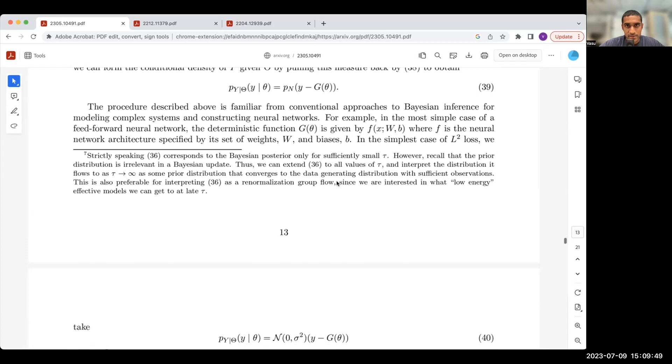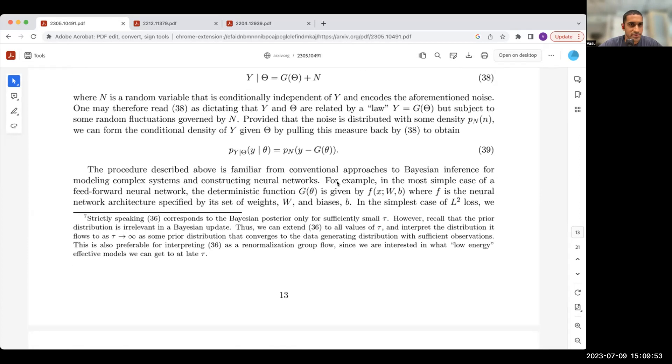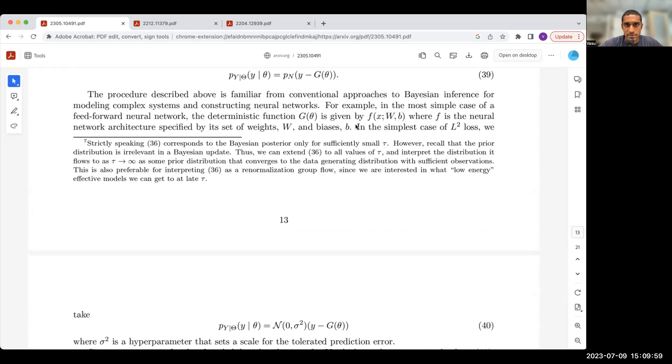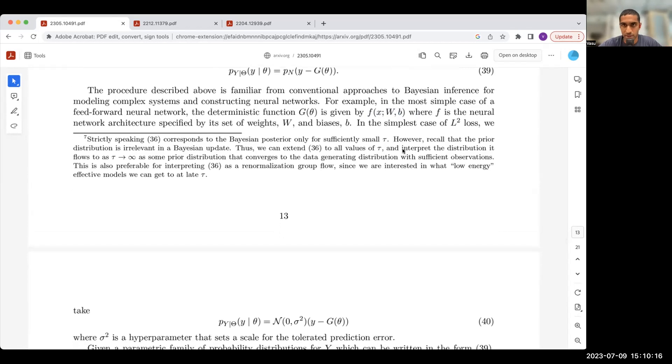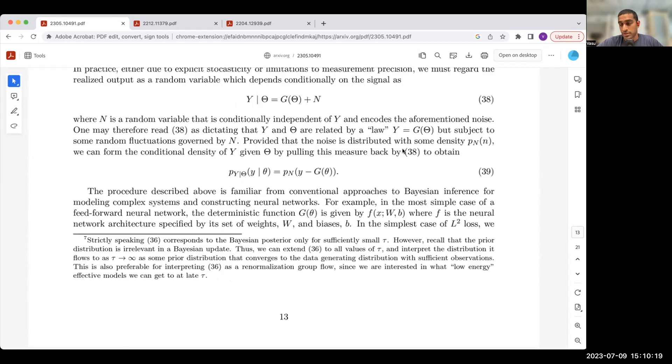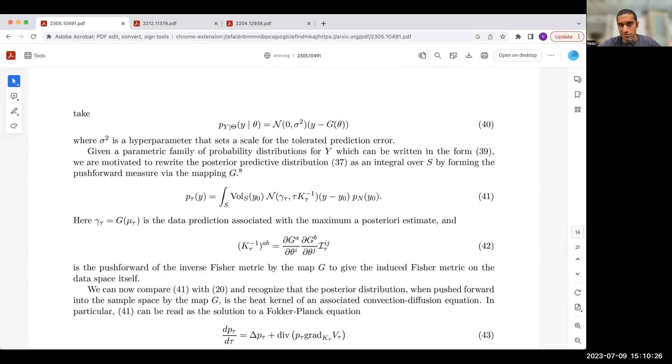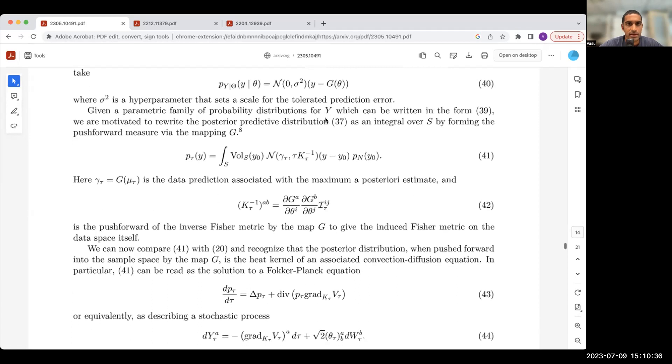This is a very simple example one could look at. For instance, say g is some function f that depends on inputs x, weights and biases that are the parameters w and b. Take this to be like a neural network function. If you wanted to train this neural network function on a quadratic L2 loss, then we just choose p to be a normal distribution. If you have a normal distribution, then the log is just going to be a quadratic function of y minus g of theta.